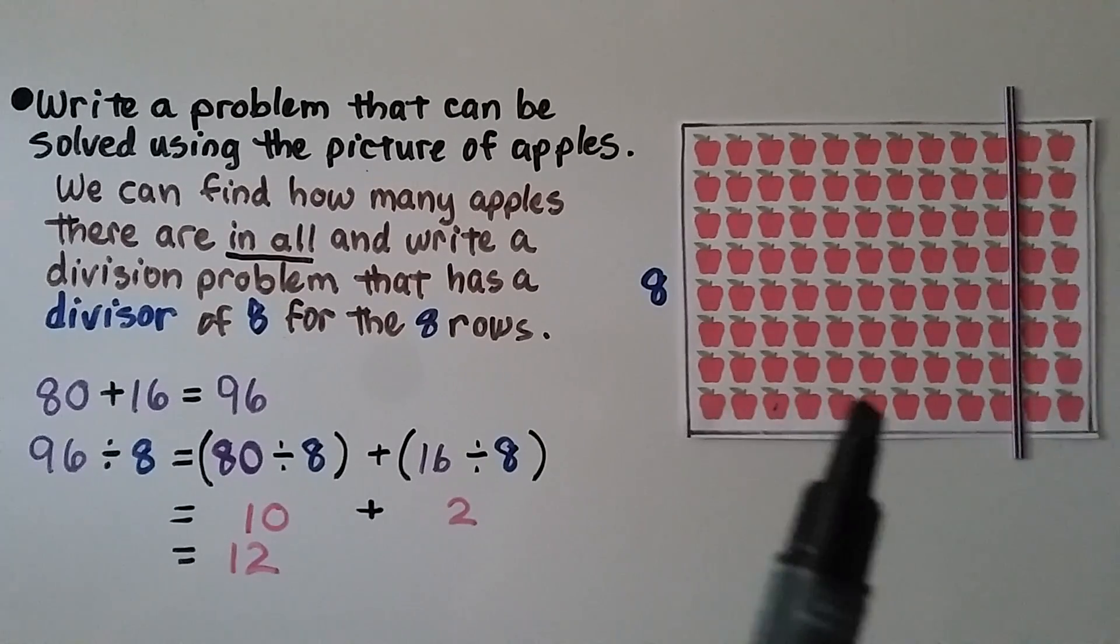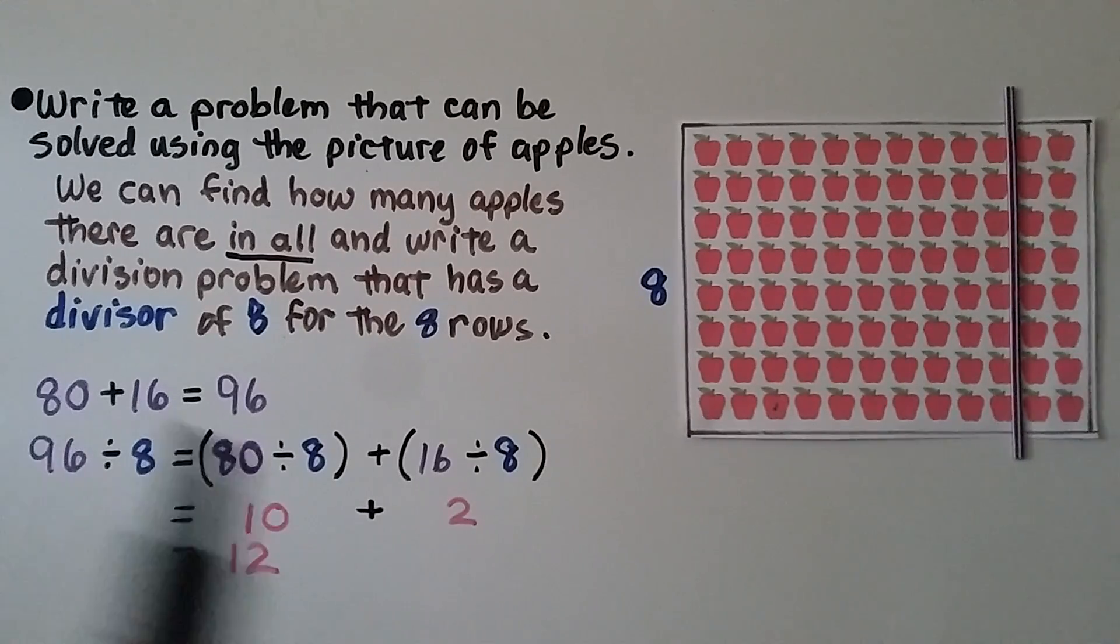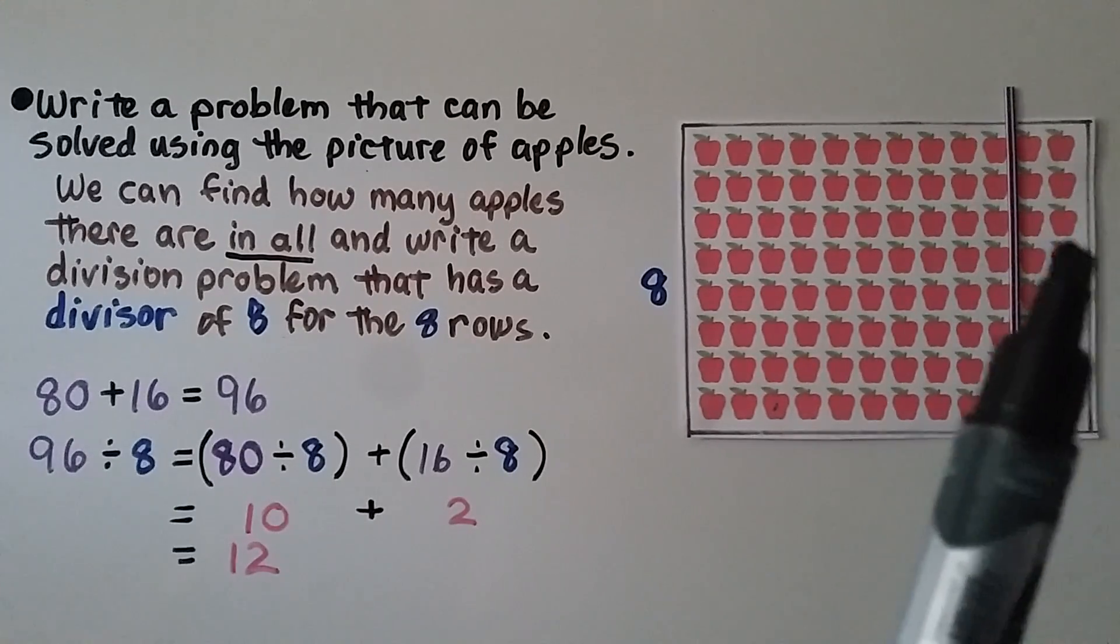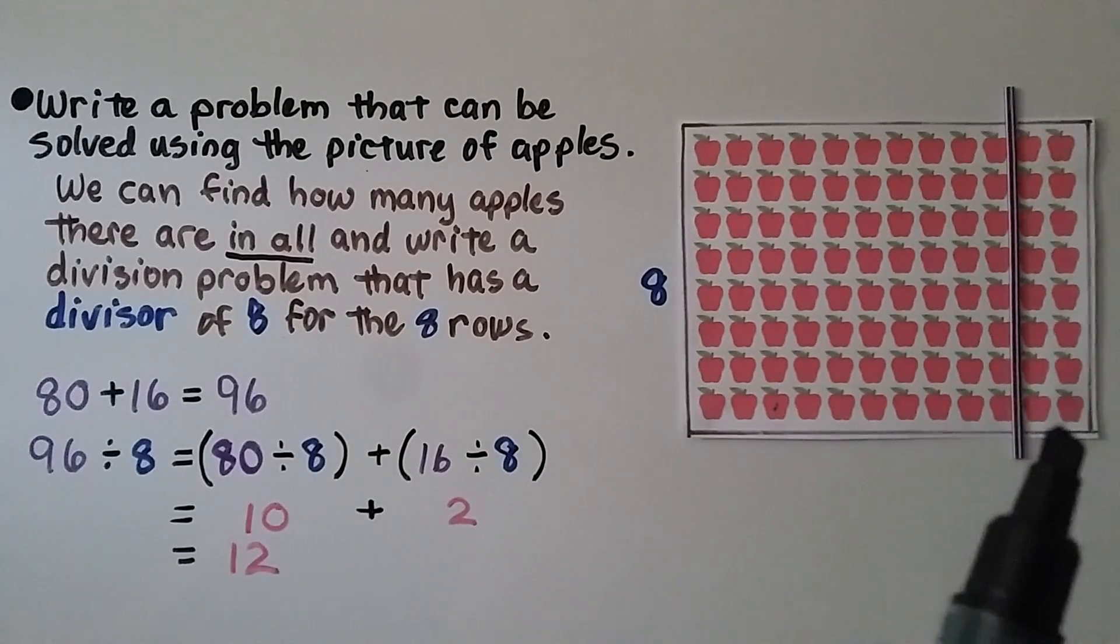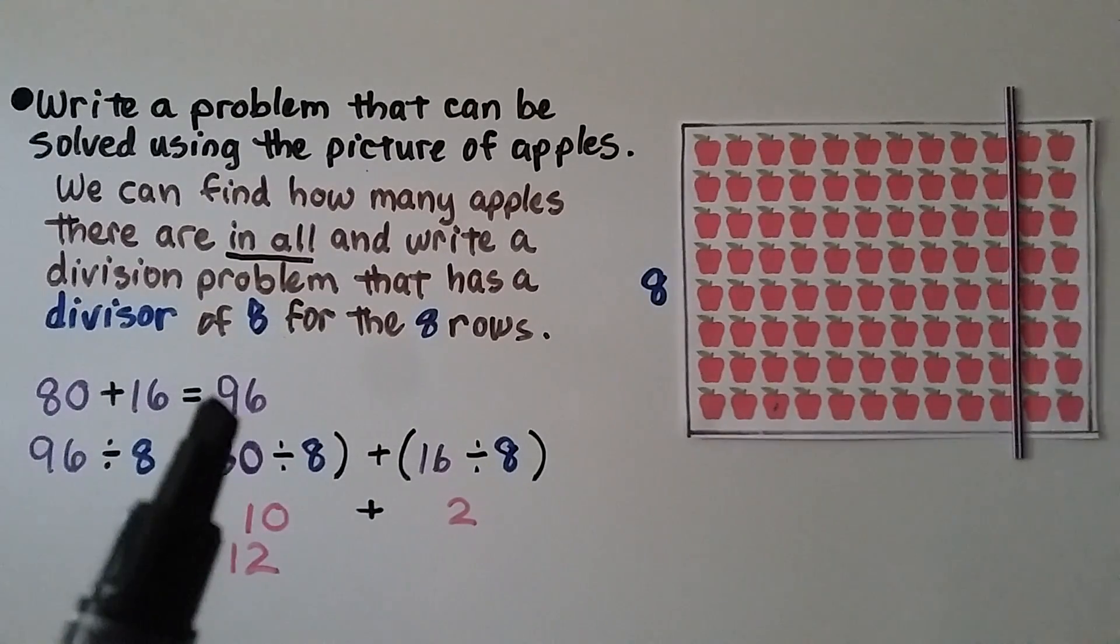We can count 10. So 10 times 8 would be 80. Then we have 2, 4, 6, 8, 10, 12, 14, 16 left over on this side. So we have 80 plus 16. That's equal to 96.